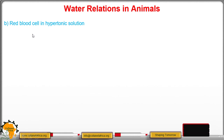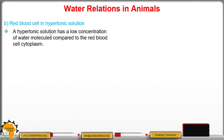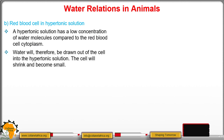Now, if a red blood cell is placed in a hypertonic solution, you should know that a hypertonic solution has a low concentration of water molecules compared to the red blood cell cytoplasm. So water will therefore be drawn out of the cell into the hypertonic solution, meaning the cell will shrink and become small because it has lost water.